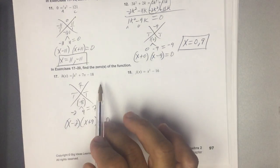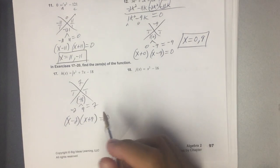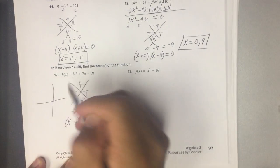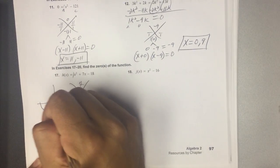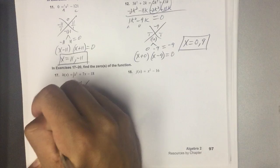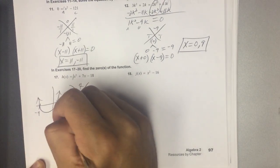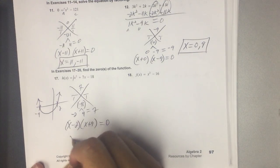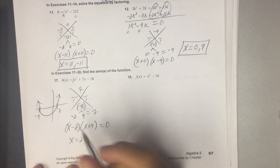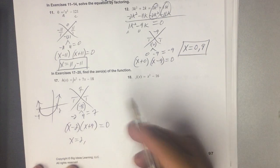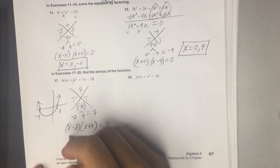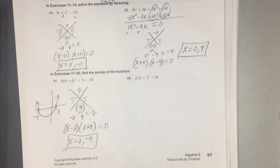Again, you could have just graphed it, found the places where it touched the x-axis. This would have looked like this. Right here at negative 9, right here at 2. Because if I put a 2 here, that's 0. If I put a negative 9 here, that's 0. So again, different ways you can solve it.